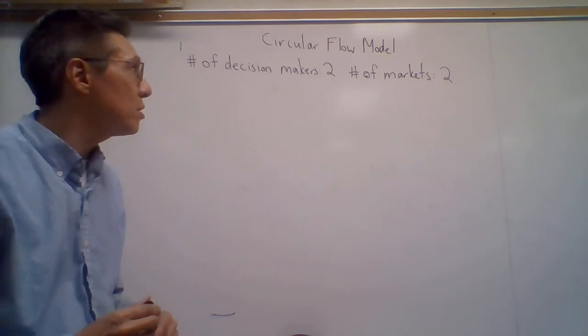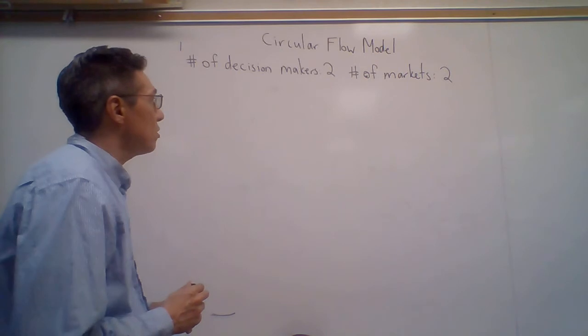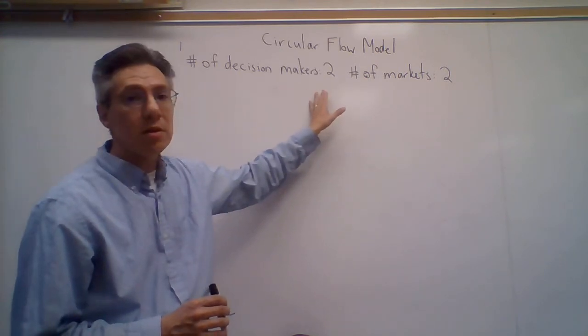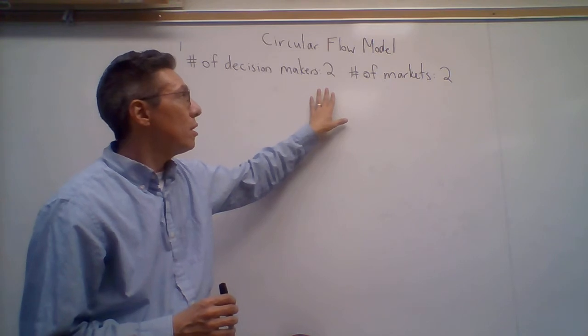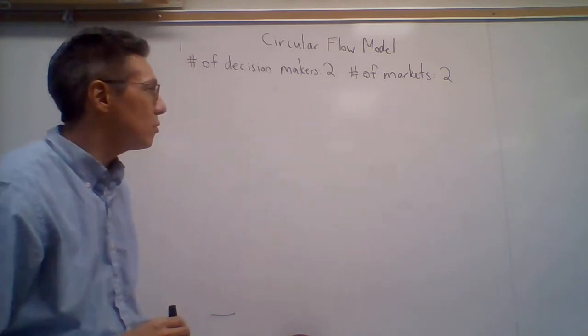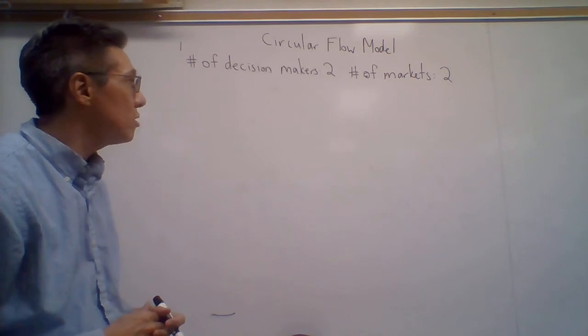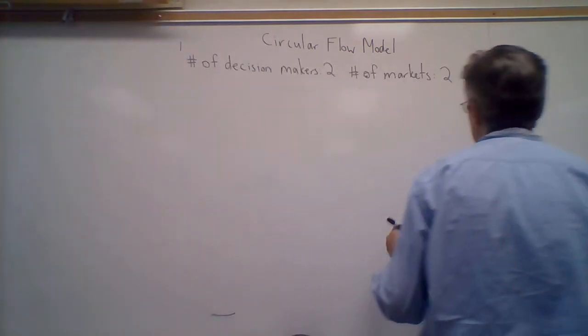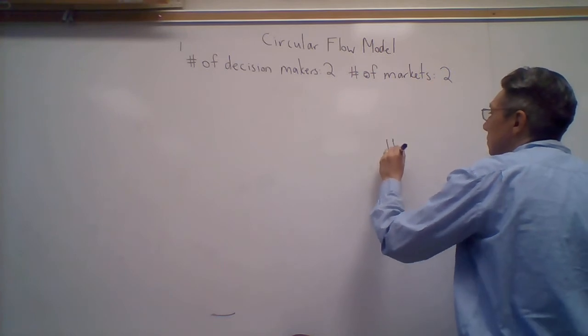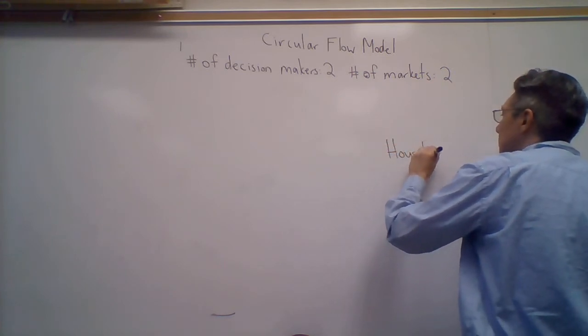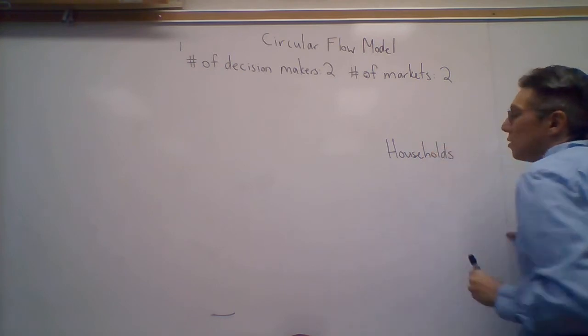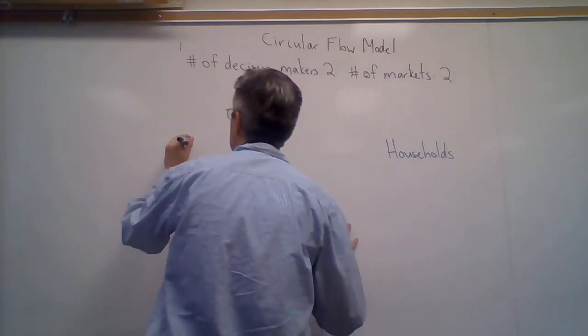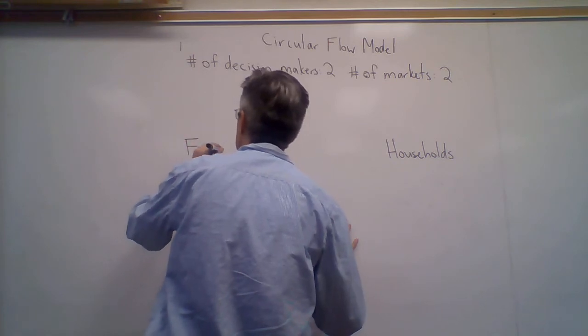In terms of what you see in your notes, the number of decision makers is two, and the number of markets is two as well. The way that we start this is with the decision makers: on the one hand households, on the other, firms.